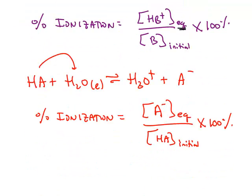If you're dealing with an acid, it works the same way. The acid turns into A minus ion, and you take that equilibrium amount divided by the initial concentration of acid times 100%.